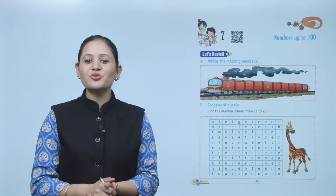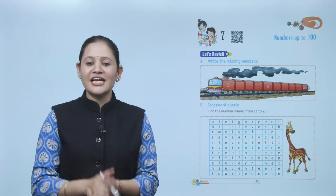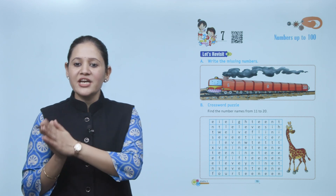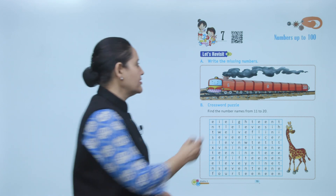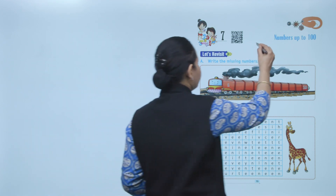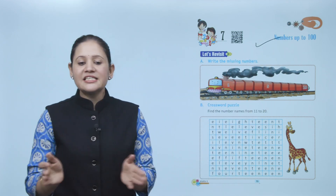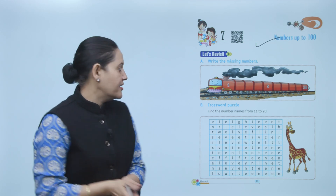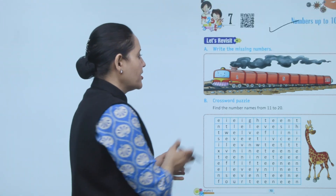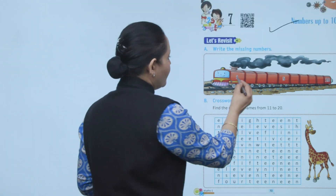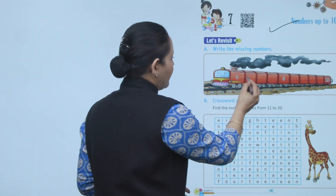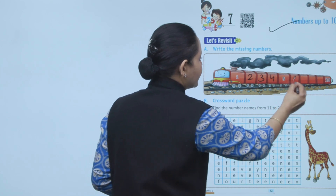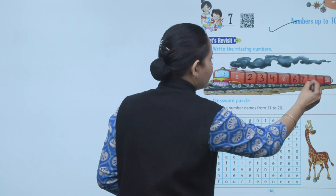Hello kids, welcome to today's math class. Today we'll do numbers up to 100. Let's revisit: write the missing number. What comes after 1? 1, 2, 3, 4, 5, 6, 7.